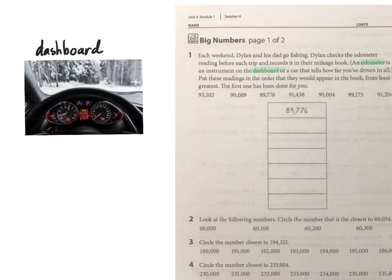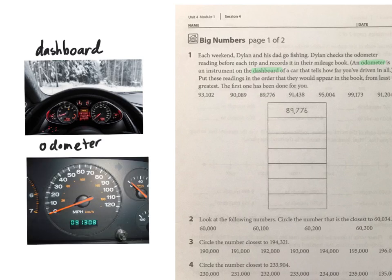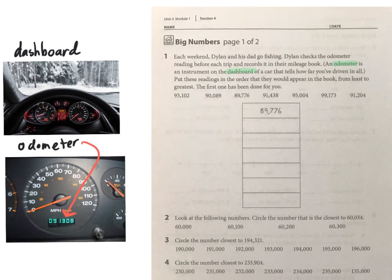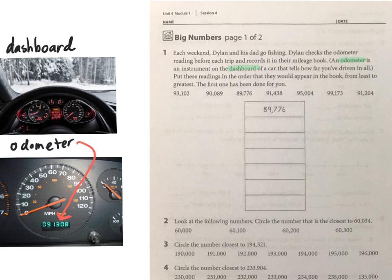The dashboard of a car is the part that gives you all the information in front of the driver so they can see what's going on. Specifically, the odometer tells you how far a car has traveled in its whole lifetime — so this car has been traveling 91,308 miles. It's usually in miles or kilometers depending on your country. They're looking at their odometer to see how far they've driven during these fishing trips before and after each one.